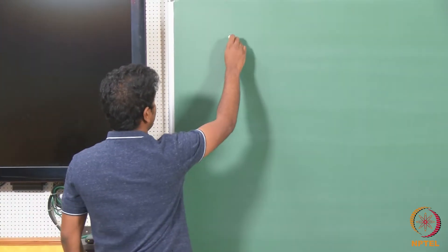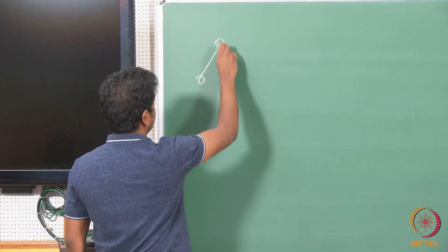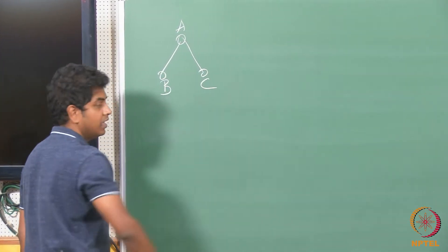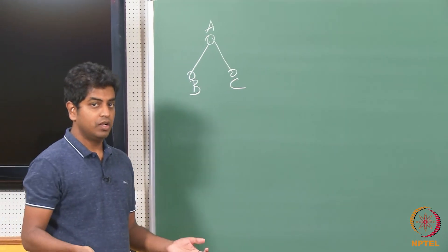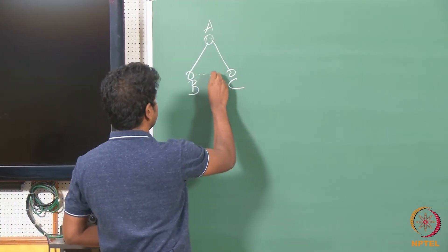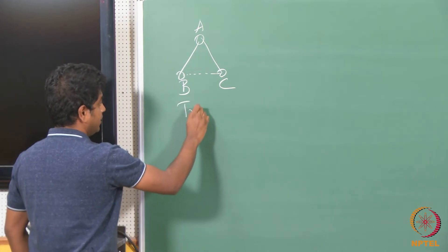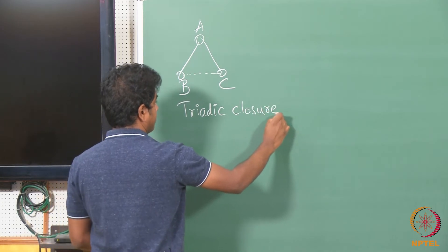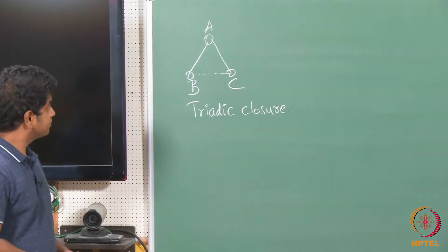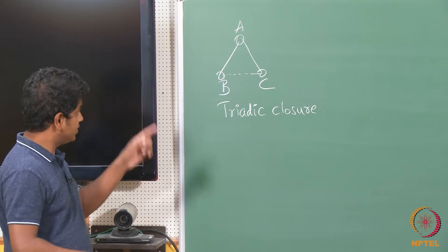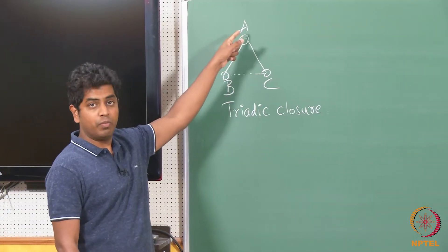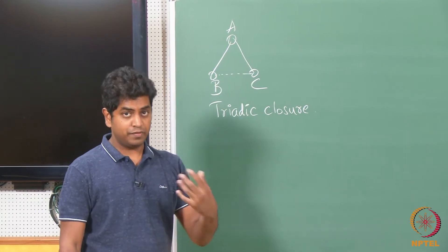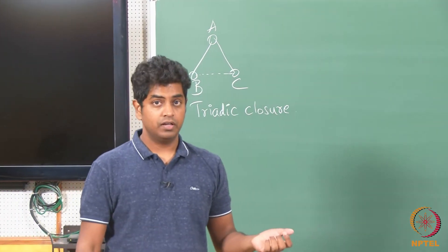We saw triadic closure, where person A has two friends B and C, and there is enormous pressure for B and C to become friends. This is called triadic closure. If B and C have a common friend, there is pressure for them to become friends — as they say, a friend's friend is a prospective friend.